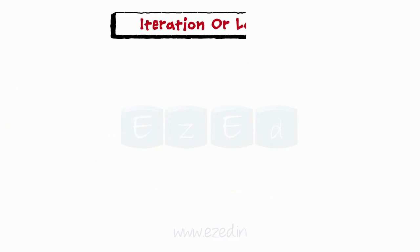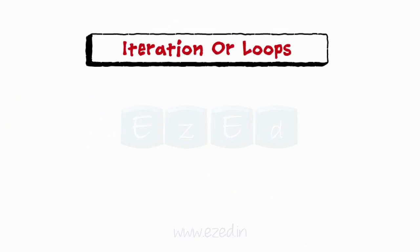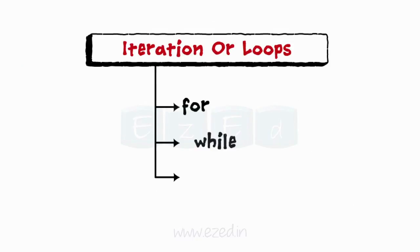Iterations or loops form the third type of control structures. They include for, while, and do-while statements.